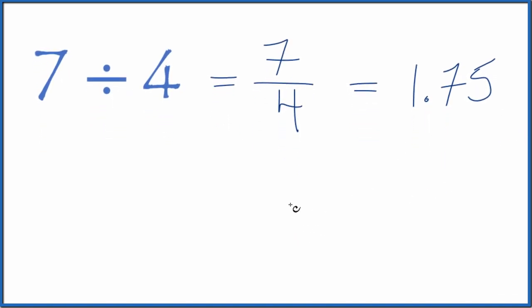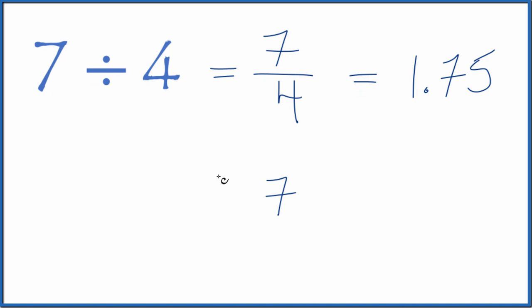You could also do it longhand. You could take 7 and see how many times 4 goes into 7. It goes into 7 once, 1 times 4, that's 4, 3 remainder.